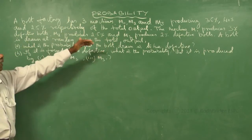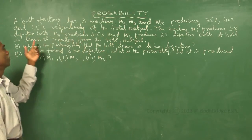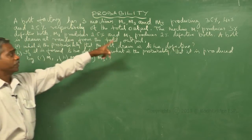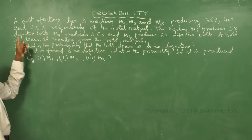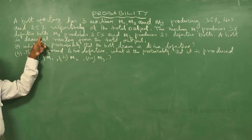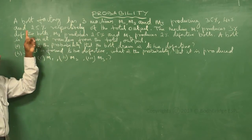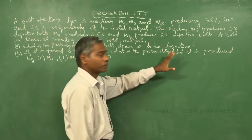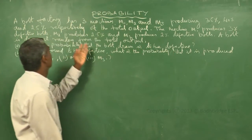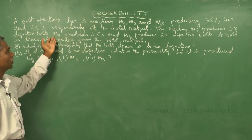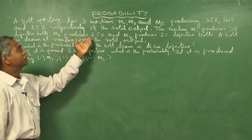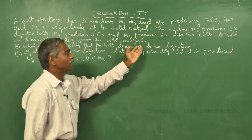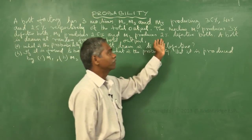Each machine has some defect rate. Machine M1 produces 3% defective bolts — that means out of every 100 pieces, 3 are defective. For machine M2 it is 2.5%, and M3 has 2% defective bolts.